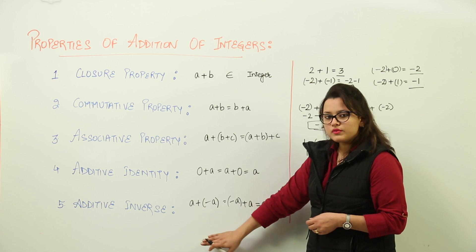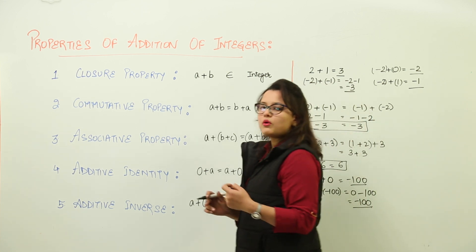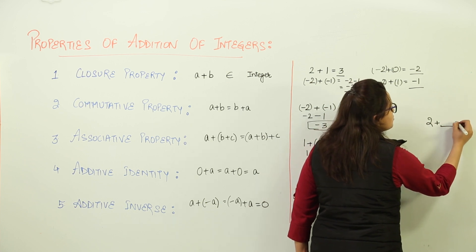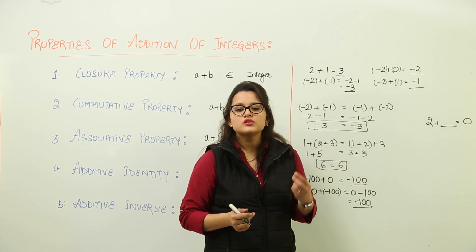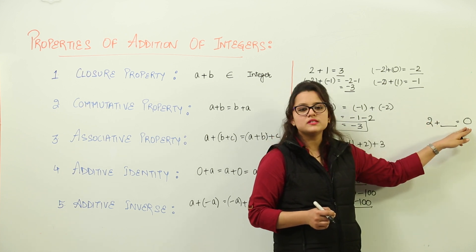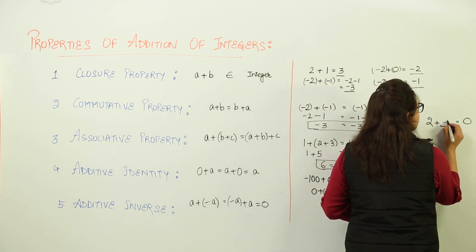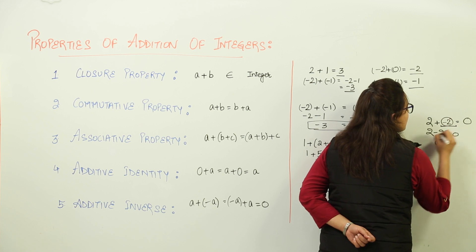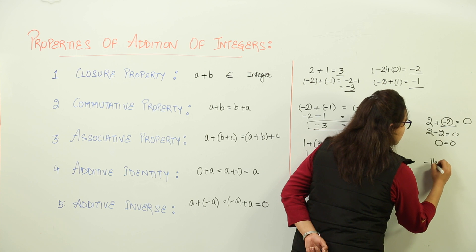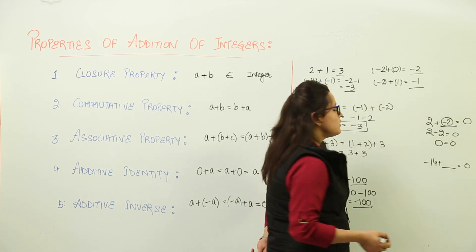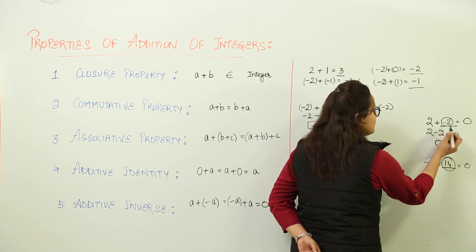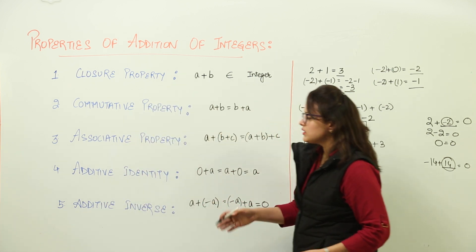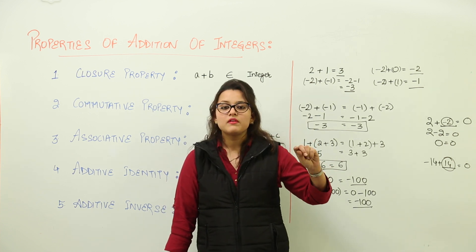The last property for addition of integers is the additive inverse — a very important and simple property. What would you add to 2 to get 0? You should add minus 2, because 2 plus minus 2 gives you 0. If I ask what should be added to minus 14 to get 0, it would be plus 14. So the additive inverse of any integer is that same integer but with the opposite sign.